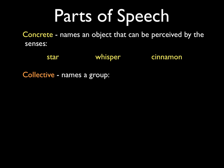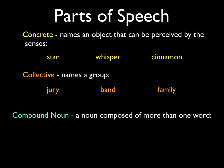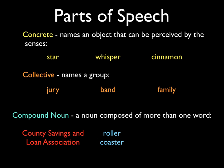There are also collective nouns. A collective noun is a word that names a group — a jury, a band, or a family. A family isn't one person; it's at least two or more, the way that we use that word in English. Then there are compound nouns, which are nouns composed of more than one word. For example: County Savings and Loan Association, or roller coaster — two words but one thing — or weekend. Those two words go together to form a compound noun. And here's one that's hyphenated: forget-me-not.